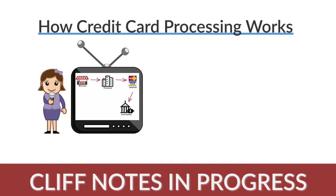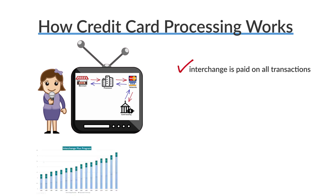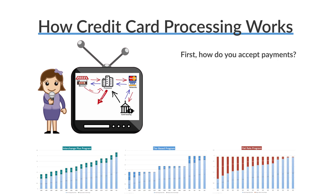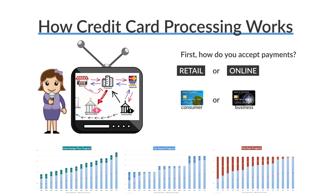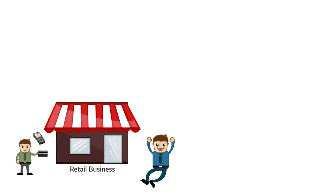Here's the cliff notes version: since interchange is applied to every single credit card purchase, you'll pay it regardless of whether you're on an interchange plus, tier-based, or flat rate structure. In any given transaction, one of these three programs could be better than the others — it depends on your processing environment, whether retail or internet, and whether you're accepting mostly consumer or business cards.